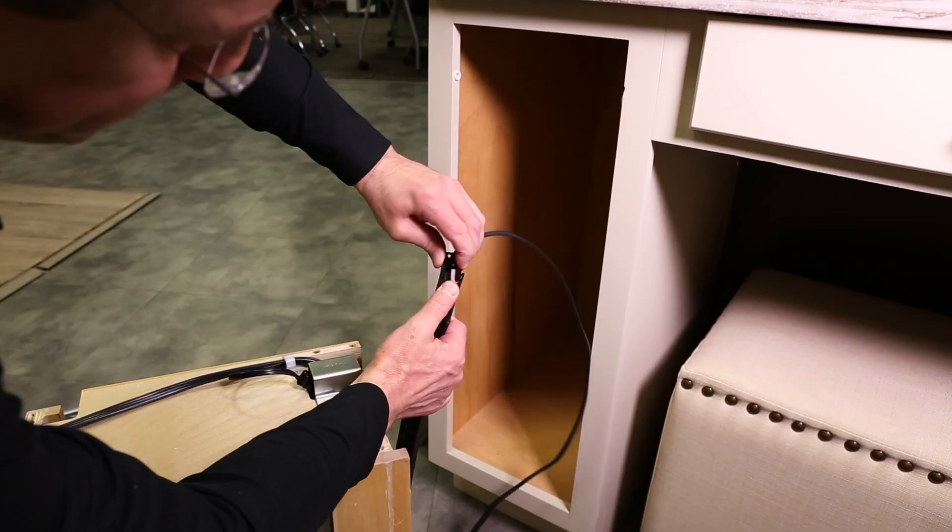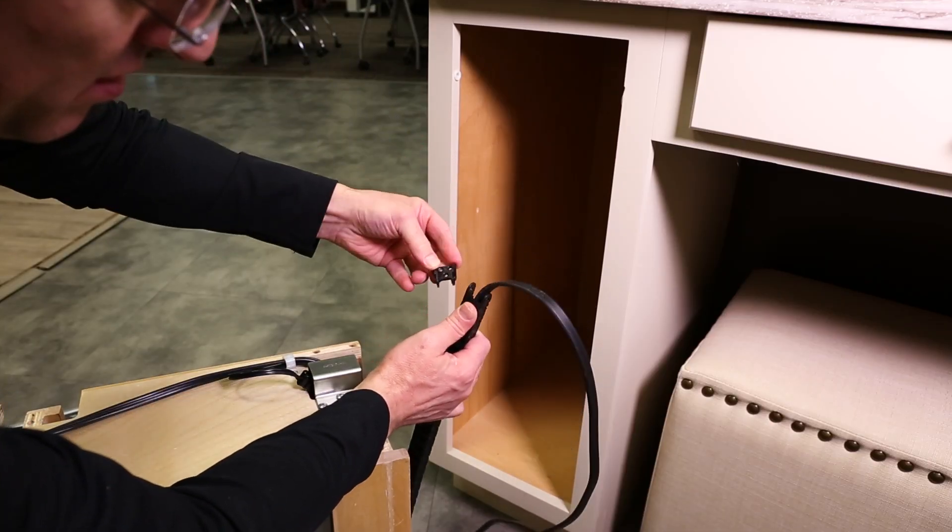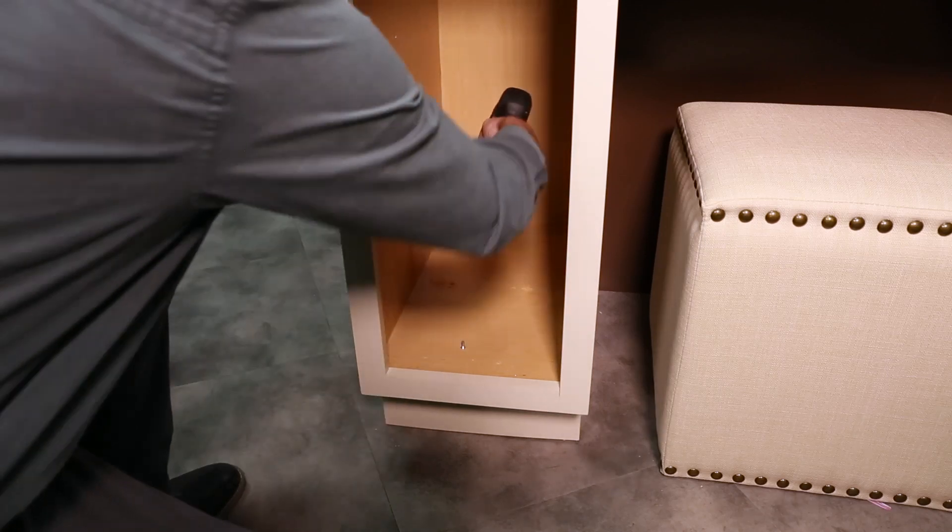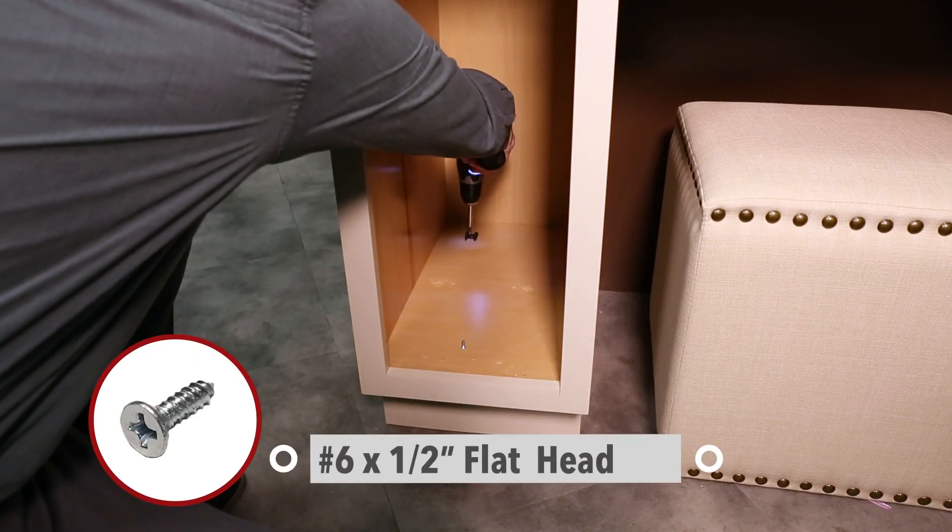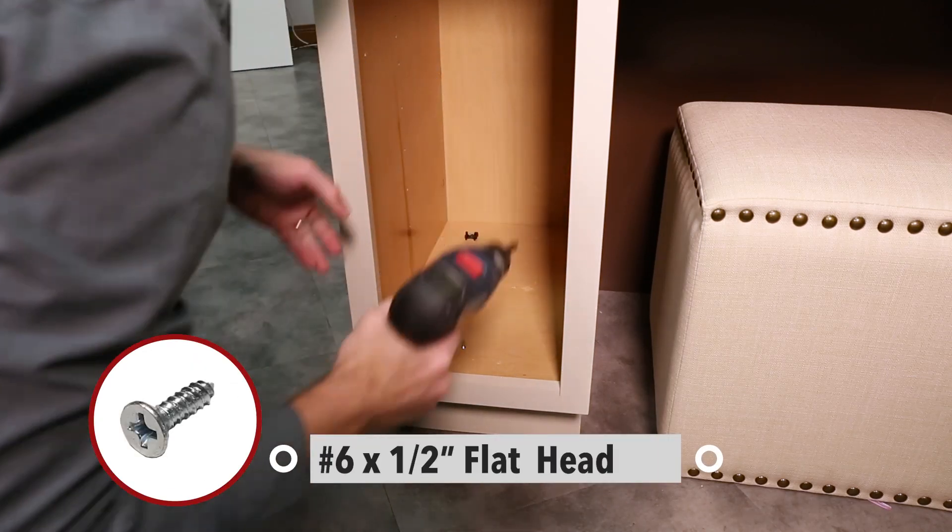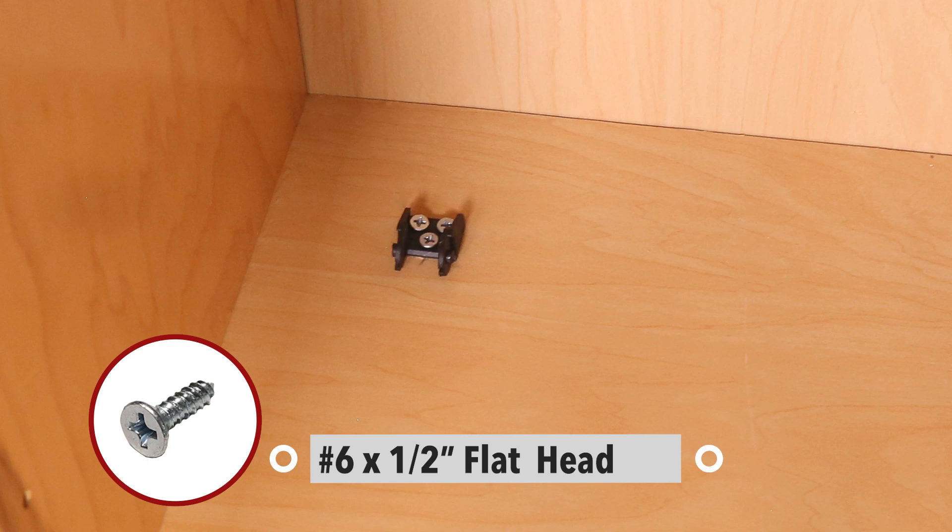With the unit on its side, extend the chain and detach the end piece. Secure the end piece to the cabinet floor using the number 6 by 1/2 inch flat head screws.